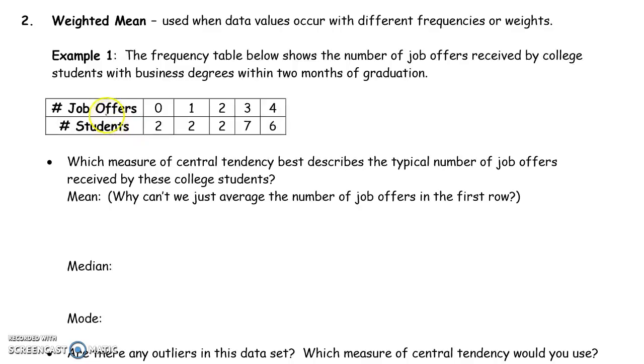So in this case, we see that we have zero job offers, one, two, three, or four job offers, but a different number of students who received those job offers. So two students received no job offers, and two students received one job offer. If we were to list all of this out, it would look a lot different. We would have to write out zero twice, one would have to be listed twice, and two would be listed twice.